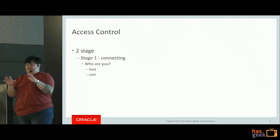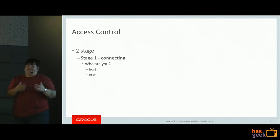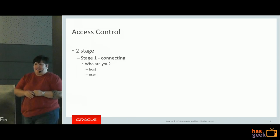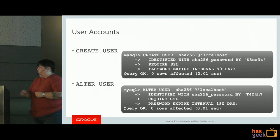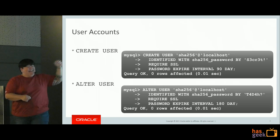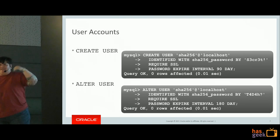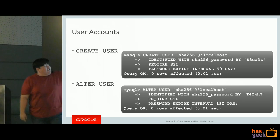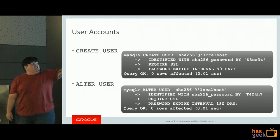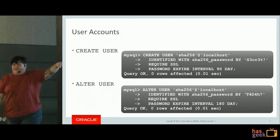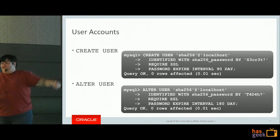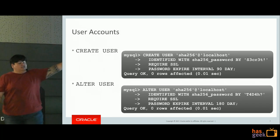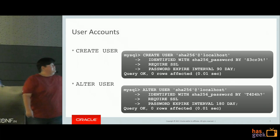Bob from a wildcard host has the potential to connect as the anonymous user from localhost because it matched the specific localhost value first - understand that gotcha. The user account information - the hostname and username - is how you create them. In the CREATE statement, the 'sha256 at localhost' format represents a user account name, so when you connect, it checks that localhost host first, then tries to match the sha256 user.